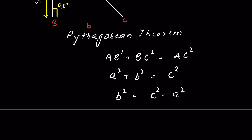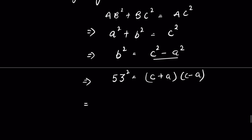Since b here is 53, we have 53² equal to c² minus a². This is 2809, and it's in the form of a difference of squares, so we can write it as (c + a)(c − a). So 2809 equals (c + a)(c − a).